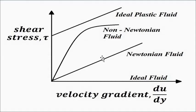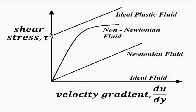So to summarize the graph: the ideal fluid has zero stress — it is the x-axis. The Newtonian fluid is a straight line starting from the origin, with stress proportional to velocity gradient. The non-Newtonian fluid shows a non-linear relationship. The ideal plastic fluid is also a straight line with some slope but starts from a higher initial yield stress value compared to the Newtonian fluid. This is how we categorize the various fluids on the basis of viscosity and shear stress.